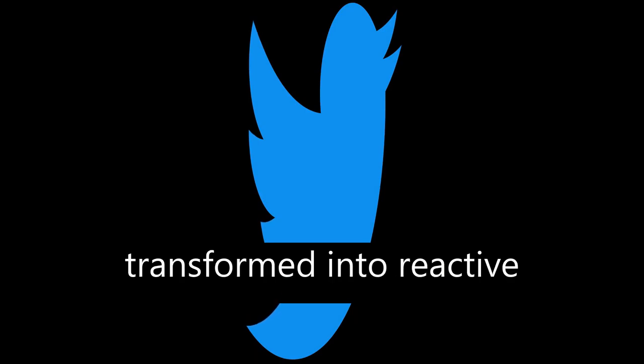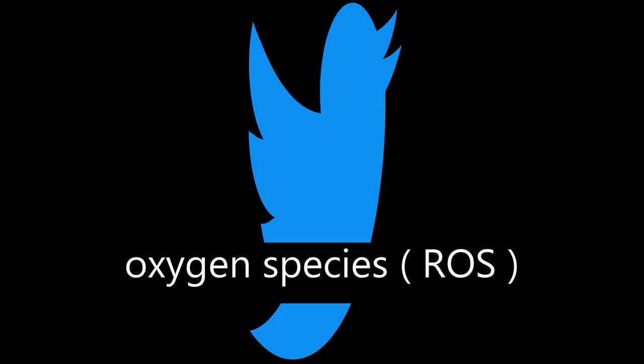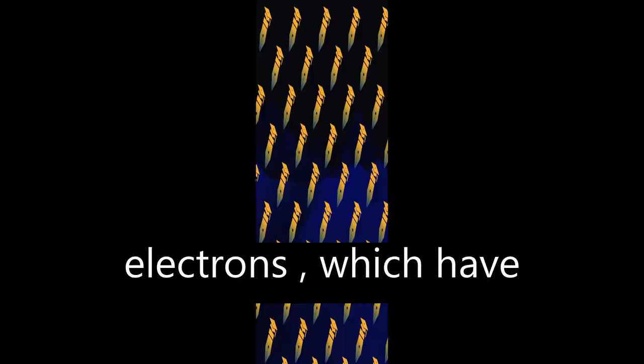Oxygen can be transformed into reactive oxygen species, ROS, upon reaction with electrons, which have both harmful and beneficial effects on health and disease.